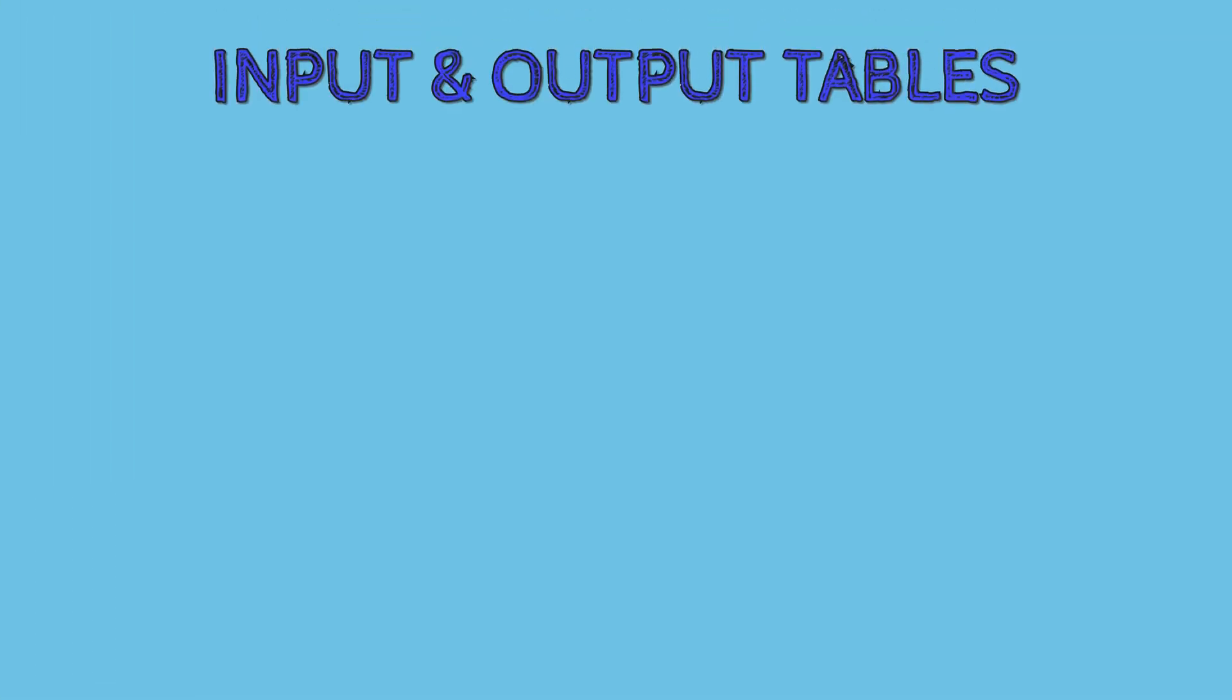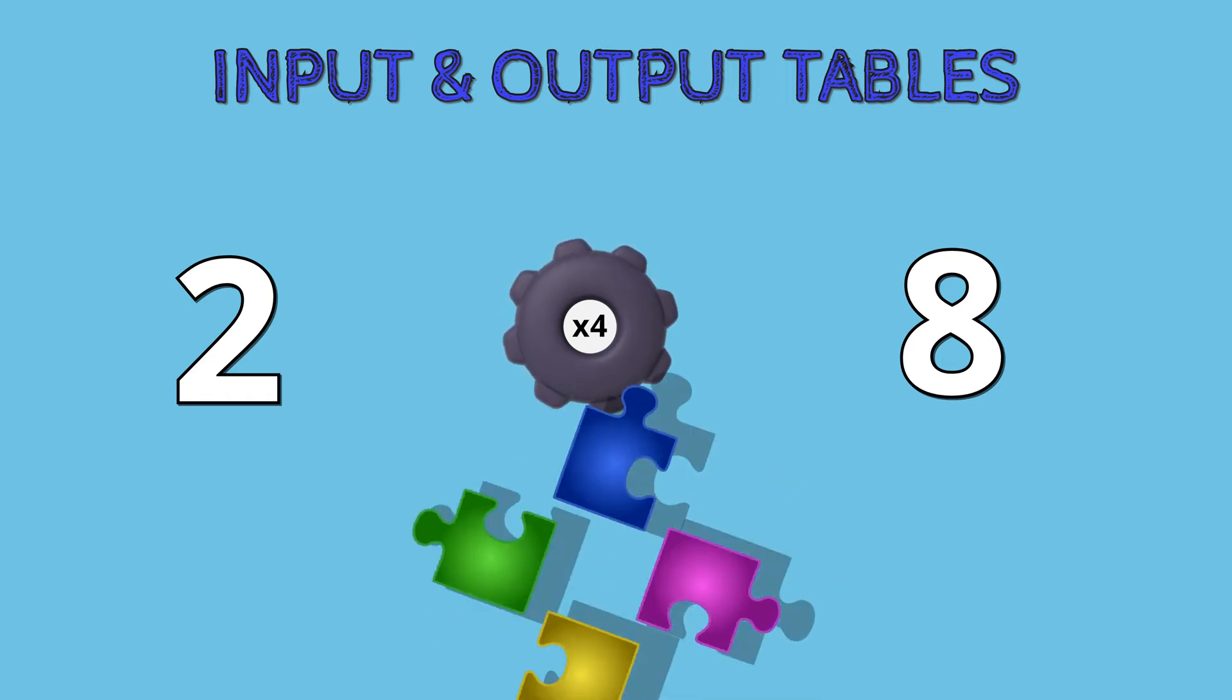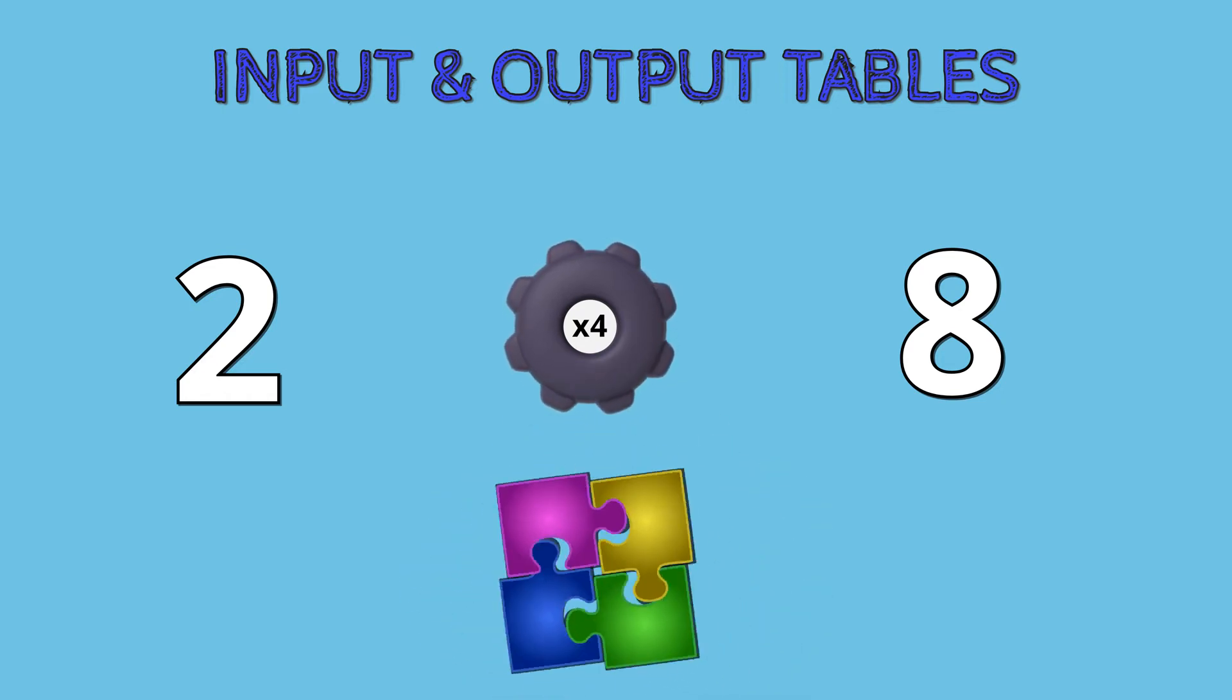Input and output tables are very similar. A number is placed in and after applying a rule a different number comes out. We can think of a rule as a puzzle or riddle that we need to solve that will work with all of our number pairs in a table.